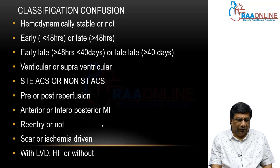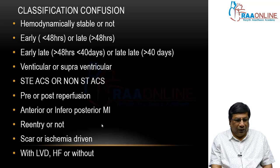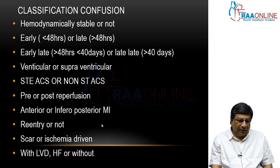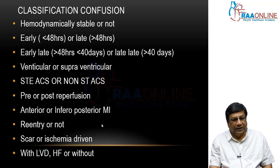Other factors to consider: whether it is a ventricular or supraventricular arrhythmia; whether the basic ACS is ST elevation or non-ST elevation; whether it is occurring before or after reperfusion; what is the site of MI — anterior MI or inferoposterior MI; what is the mechanism — reentry or automatic arrhythmia; whether it is scar-induced or ischemia-driven; and the underlying structural heart disease — LV dysfunction, heart failure, or normal LV function. All this information is necessary to appropriately diagnose and manage arrhythmias in Acute Coronary Syndrome.